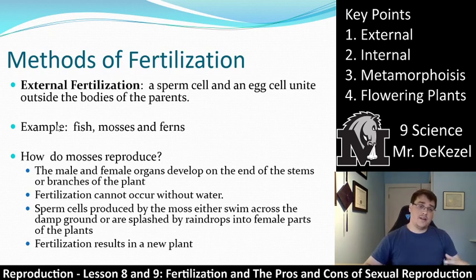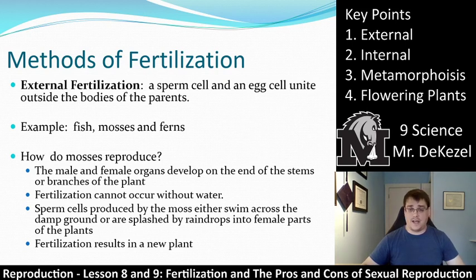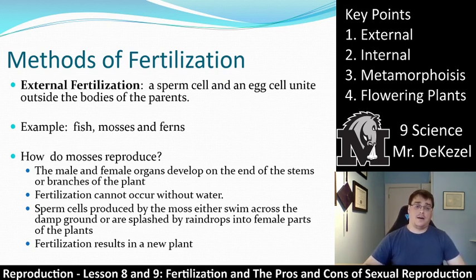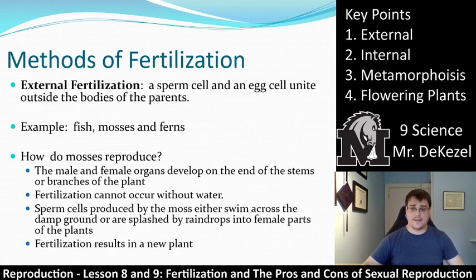Methods of fertilization: there is external fertilization and internal fertilization — key points one and two. External fertilization is when a sperm cell and an egg cell unite outside the bodies of the parents, so there is no mother carrying the offspring. The sperm and egg cell meet outside of the body. Some examples of this might be fish, mosses, and ferns, among others. We are going to discuss a few of these in detail, as well as some changes that can occur in some of these different organisms.